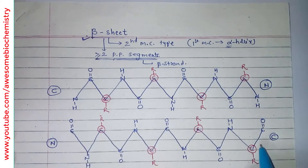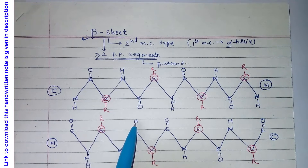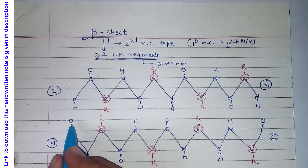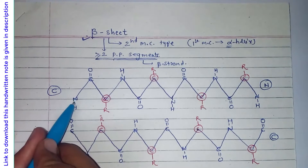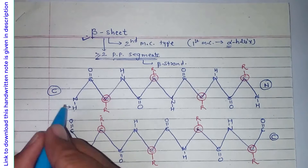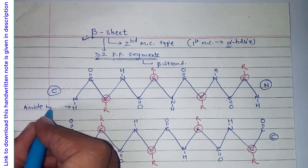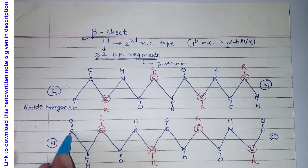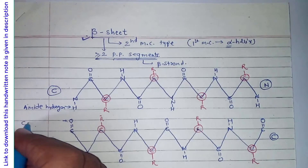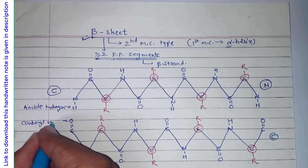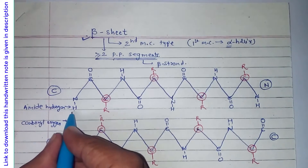Both polypeptide segments are arranged laterally — that means side by side. To stay in this position, they need some type of bonding, and for that we have hydrogen bonds. Hydrogen bonds take place between hydrogen and oxygen. This hydrogen is part of the amide group — the amide hydrogen — and this oxygen is part of the C=O, so we call it the carbonyl oxygen. The hydrogen bond takes part between the amide hydrogen and carbonyl oxygen.